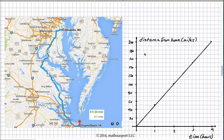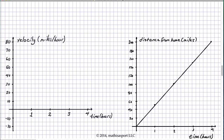We began our last lecture by looking at the distance versus time graph of a trip to my grandmother's house, but there's another way we could view that same trip. Let's get rid of the map. Instead of distance versus time, we're going to graph the rate — which we learned was more precisely called velocity — versus time. Let's equate the one graph with the other.